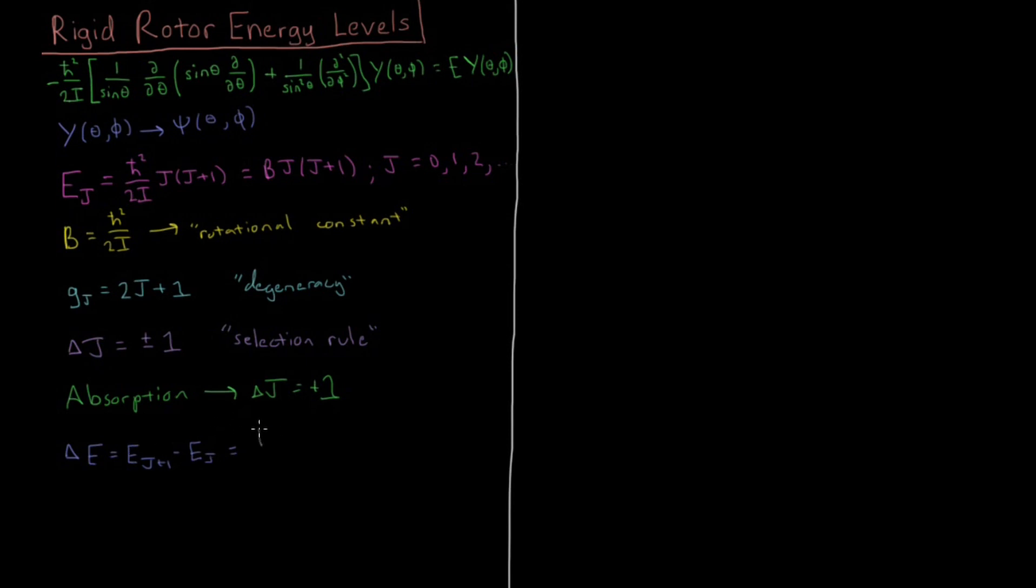And this will be equal to, we can substitute in for the algebra, h bar squared over 2i is going to be a prefactor in both of these. And then on the inside, we'll have j plus 1 times j plus 2 minus j times j plus 1. So here, j is j plus 1, so your j times j plus 1 becomes j plus 1 times j plus 2, and then minus the energy of j, which is just j times j plus 1.